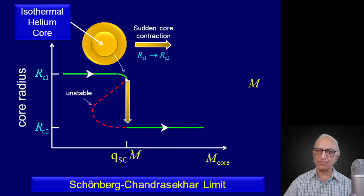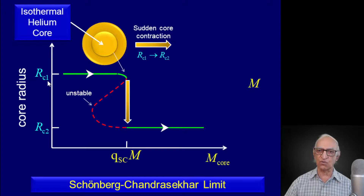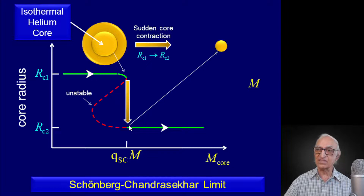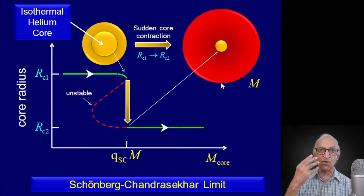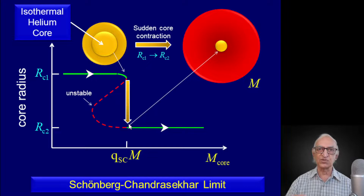Why will it contract? It will contract because it has to jump from the allowed branch to the now-allowed branch. So there is a sudden contraction in the core from the initial radius R_core1 to a final radius R_core2. Now let us invoke our gravothermal catastrophe theorem: when the core contracts, the star will have to expand, and therefore the star will become a giant. This transformation from a dwarf star to a giant doesn't occur over a very long period of time but occurs rather suddenly because of this instability — a discontinuous jump in the radius, like a first-order phase transition when you go from water to ice.